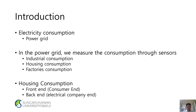Introduction: Electricity Consumption. In the power grid, we measure the consumption through sensors — industrial consumption, housing consumption, factories consumption, and housing consumption. This spans from the front-end consumer end to the back-end electric company end.